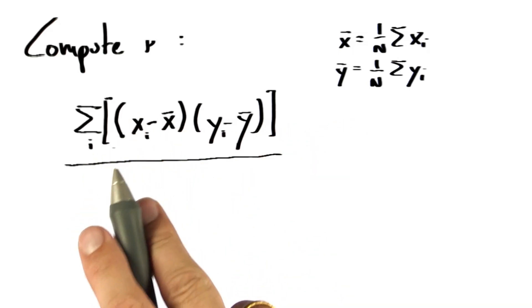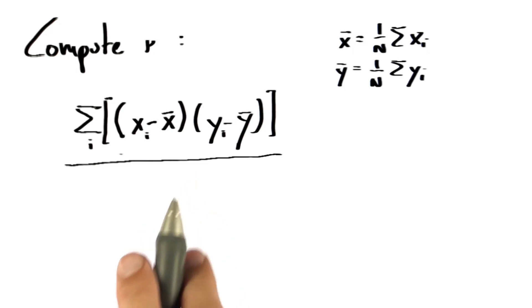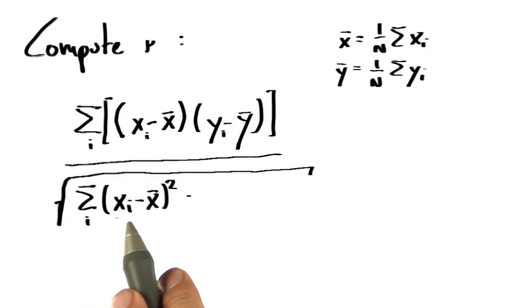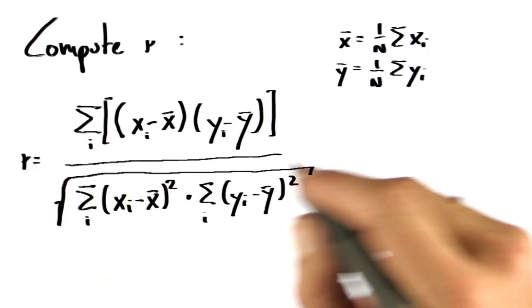And then we have to normalize. This could be any value. It isn't between plus minus 1. We normalize by a square root of x minus the mean of x squared, sum of all i times the same expression for y.